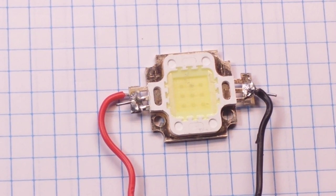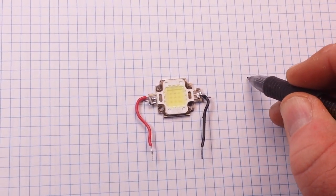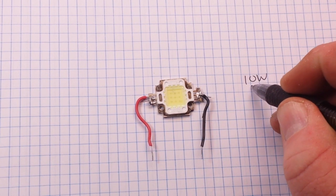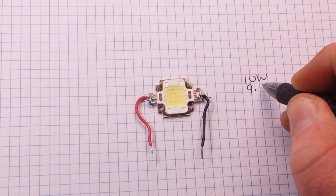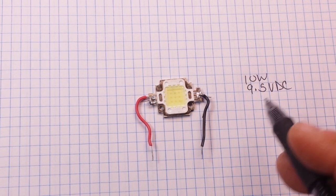So now we have two things. We know our LED needs 10 watts. We know we're going to give it 9.5 volts DC.